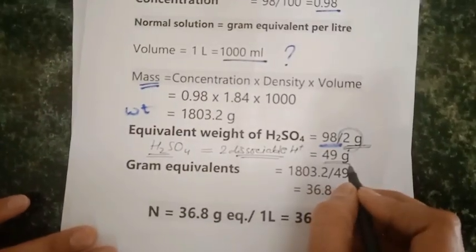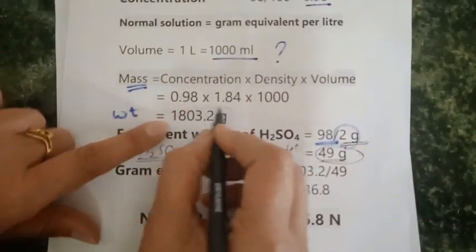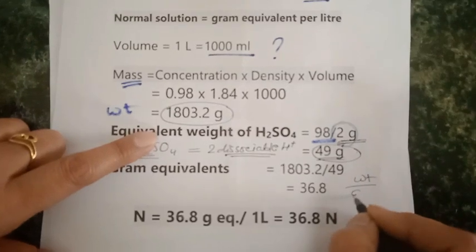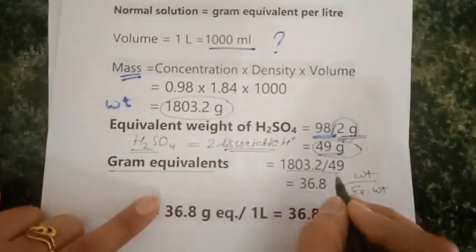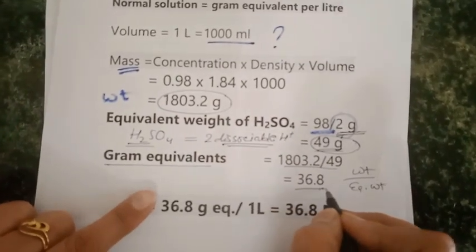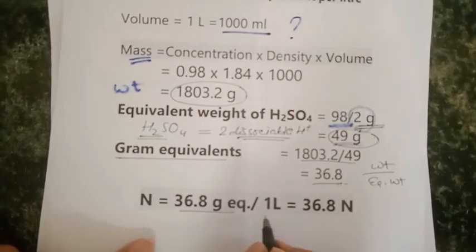Now we are going to calculate the gram equivalents. To calculate gram equivalents: weight which we calculated divided by equivalent weight, and in that way I get 36.8 gram equivalents. This gives us the normality, which is 36.8 for the given concentrated H2SO4.